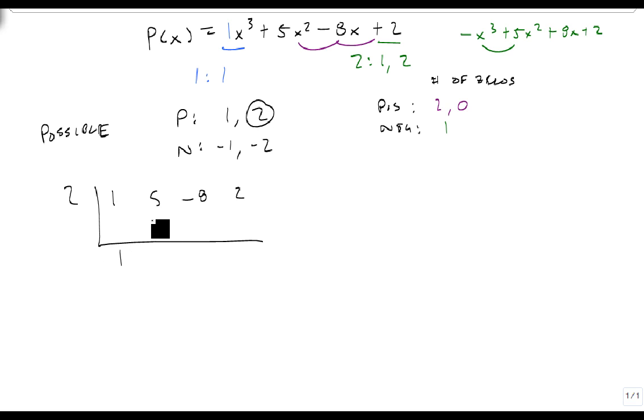So I plug the 2 in. That's a 7, that gives me a 14 which is a 6, gives me a 12 which is a 14. Notice that this is not a 0, so 2 is not a zero.